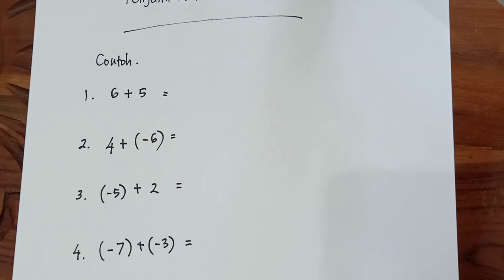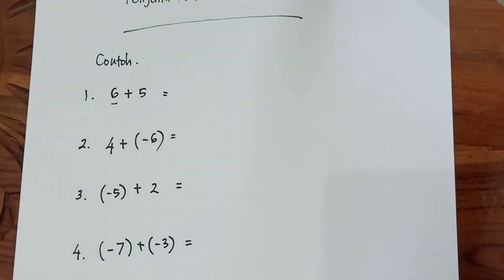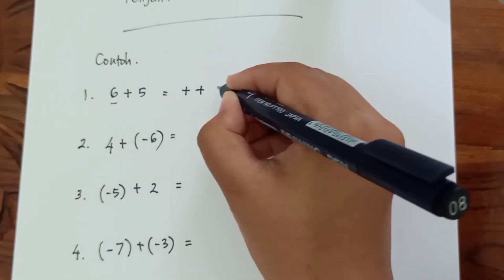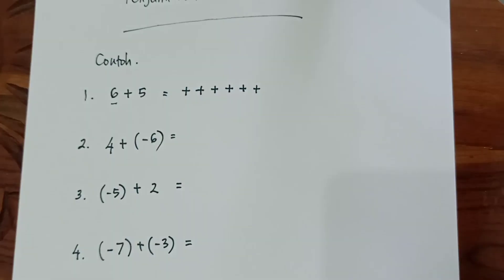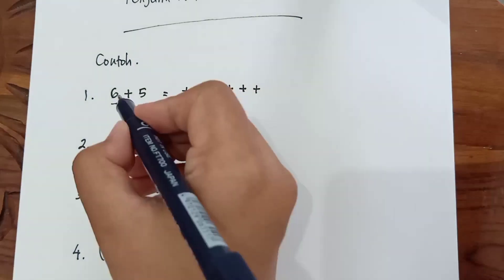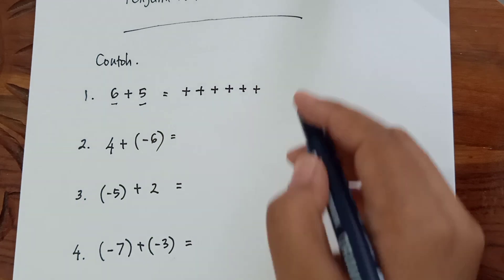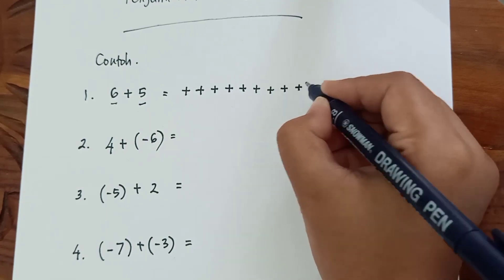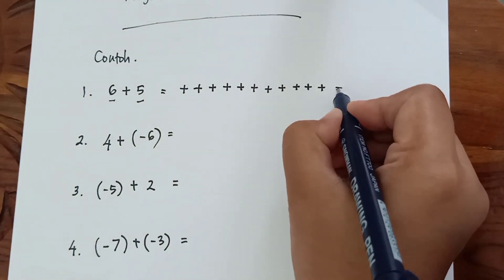5. Mari kita kerjakan seperti ini. 6 adalah bilangan positif, maka kita tulis di sampingnya positif sebanyak 6 kali. Ditambah lagi dengan 5, 5 juga sesama positif, maka lanjutkan ke kanan. Tambah 1, 2, 3, 4, 5. Maka hasilnya